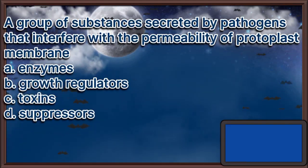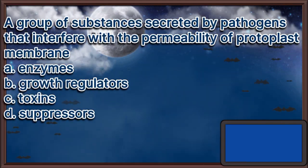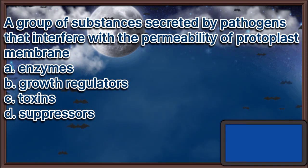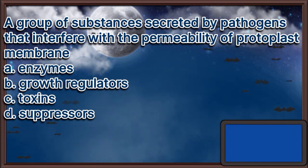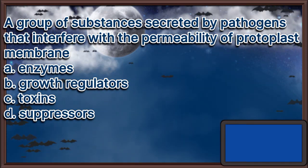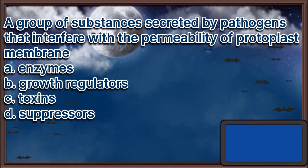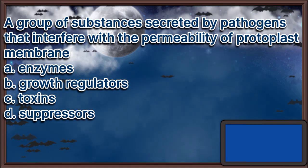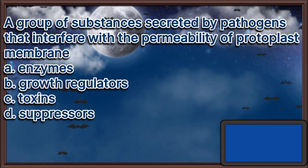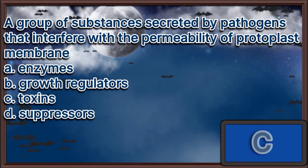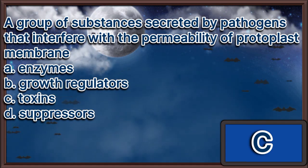A group of substances secreted by pathogens that interfere with the permeability of the protoplast membrane. A. Enzymes. B. Growth regulators. C. Toxins. D. Suppressors. The answer is letter C.